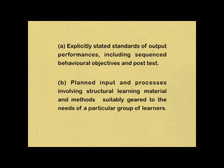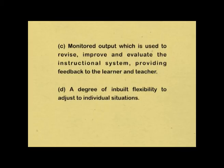The instructional system involves the following interlinked and interdependent stages. A. Explicitly stated standards of output performances including sequenced behavioral objectives and the post-test. B. Planned input and processes involving structural learning material and methods suitably geared to the needs of a particular group of learners. C. Monitored output which is used to revise, improve and evaluate the instructional system, providing feedback to the learner and teachers. D. A degree of inbuilt flexibility to adjust to individual situations.